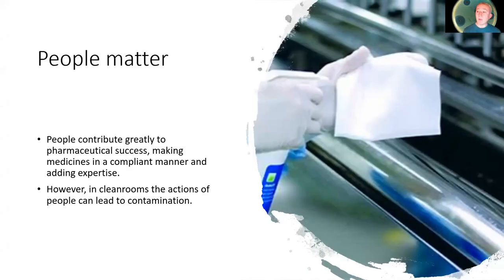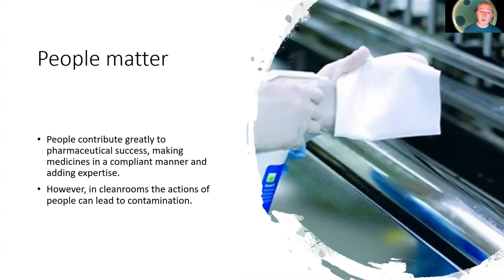I'm going to begin with people, because people are essential for the manufacture of pharmaceutical products. We are needed in order to operate complex machinery, to clean and disinfect, to review and release batches and so on. But the important aspect is the interactions of people within clean rooms and controlled environments. We can design clean rooms to be highly effective using high efficiency particulate air filters, pressure differentials, and high air change rates. But the people factor is a relatively unpredictable aspect that can lead to contamination.